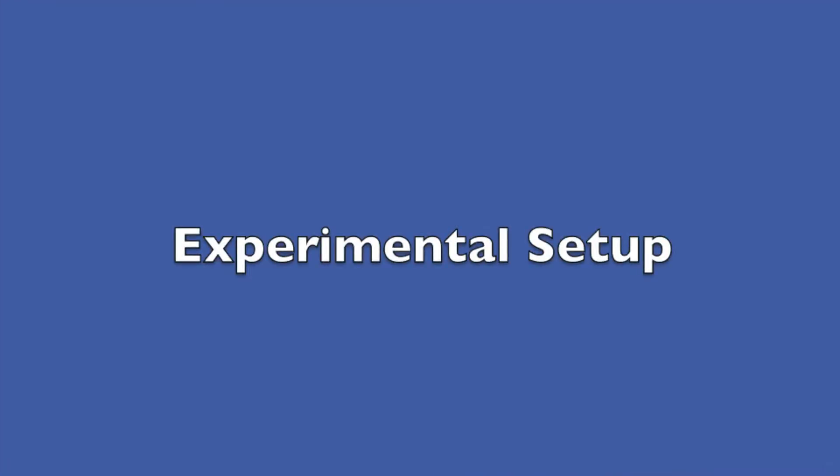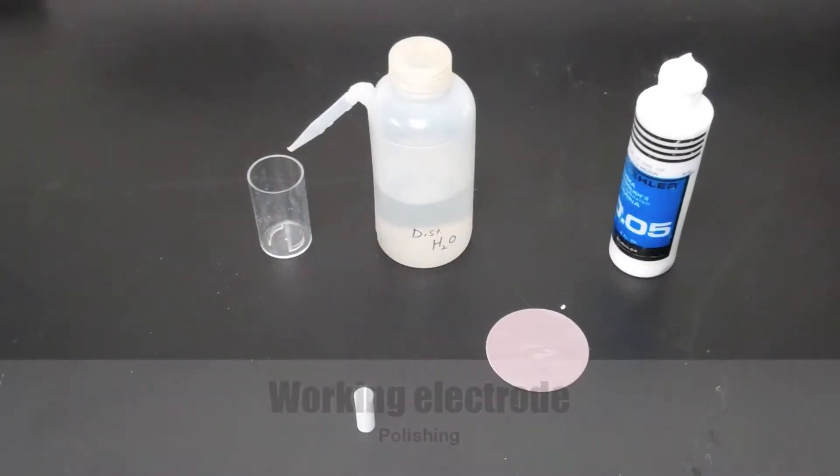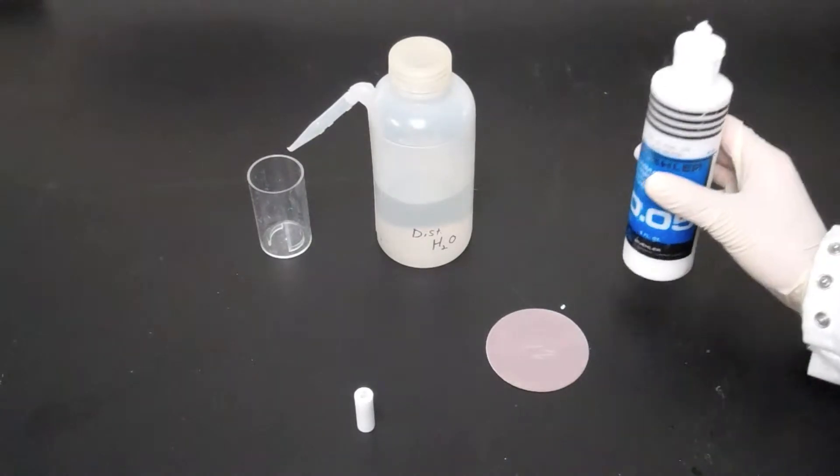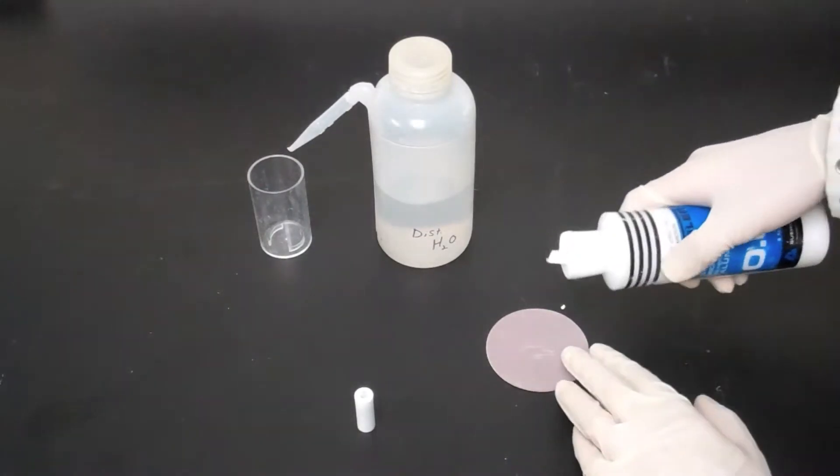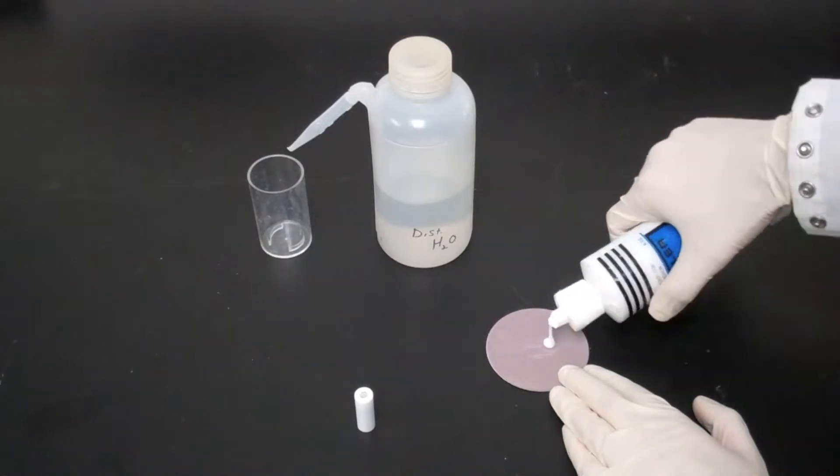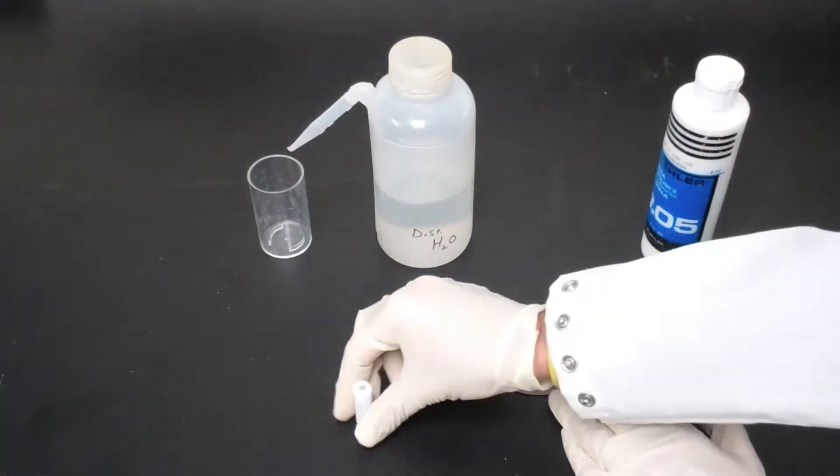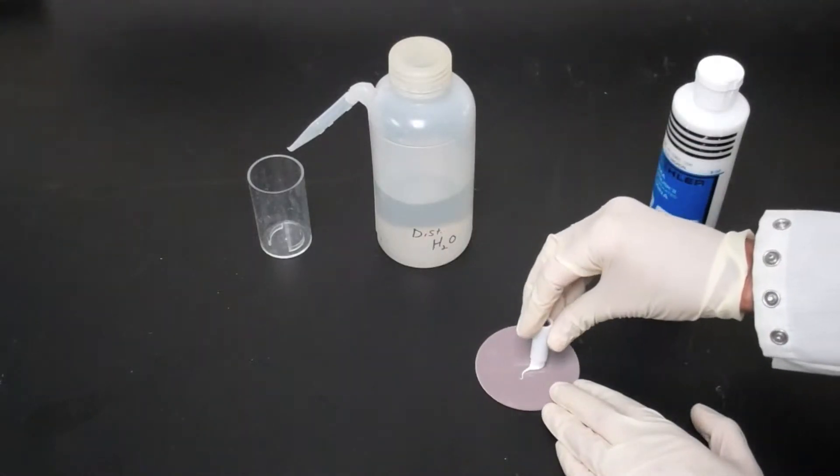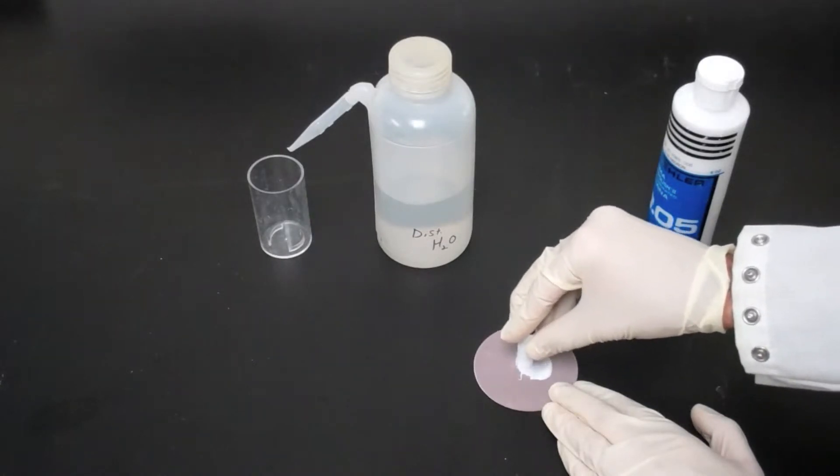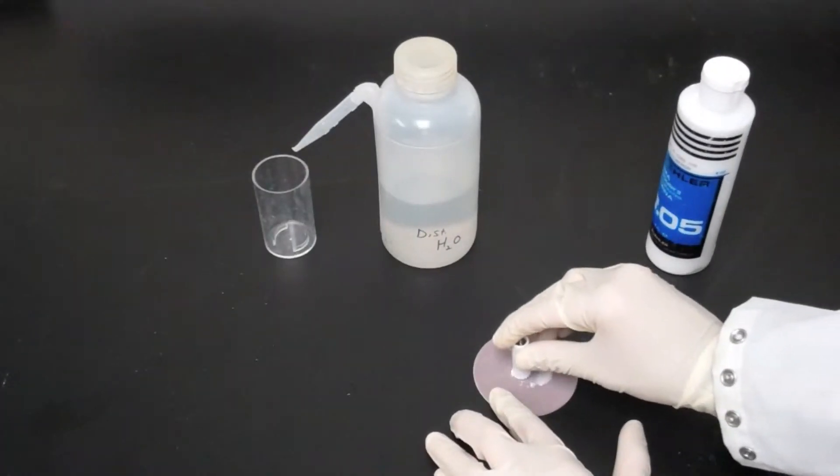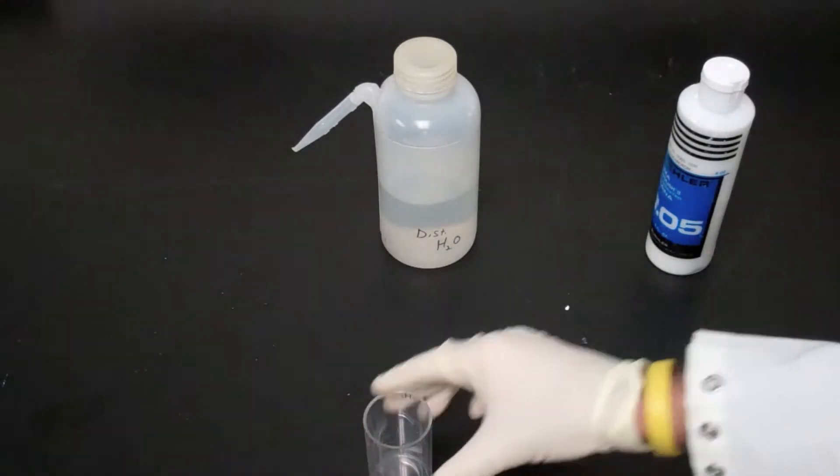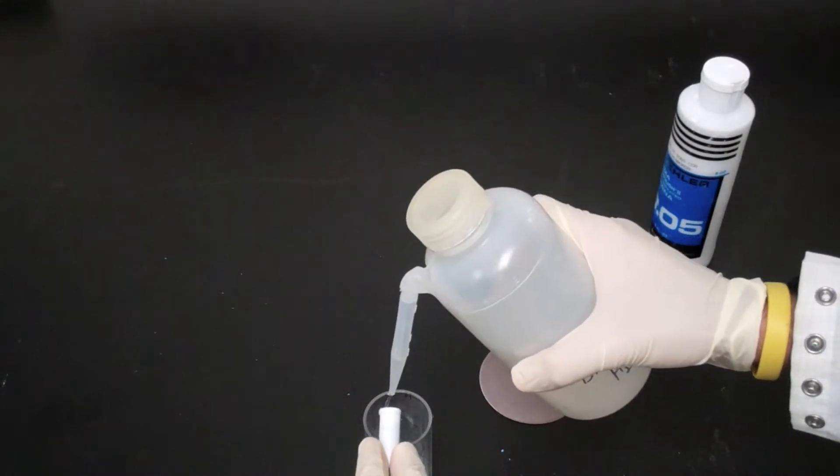Experimental Setup. Before the experiment can begin, the platinum electrode must be polished. Start by placing a small amount, about 3 milliliters, of 0.05 micron aluminum polishing compound on a piece of filter paper. Taking the electrode, gently rub the electrode on the polishing compound moving in small circles for about a minute. When this is done, rinse the electrode off with distilled water and clean any remaining residue with a kim wipe.